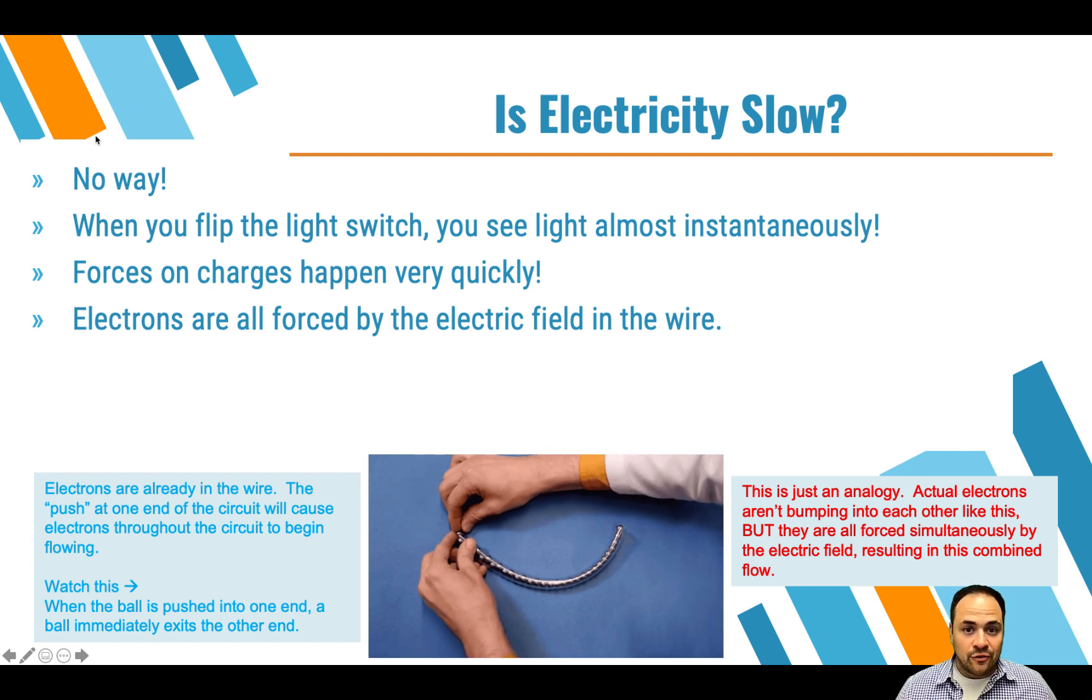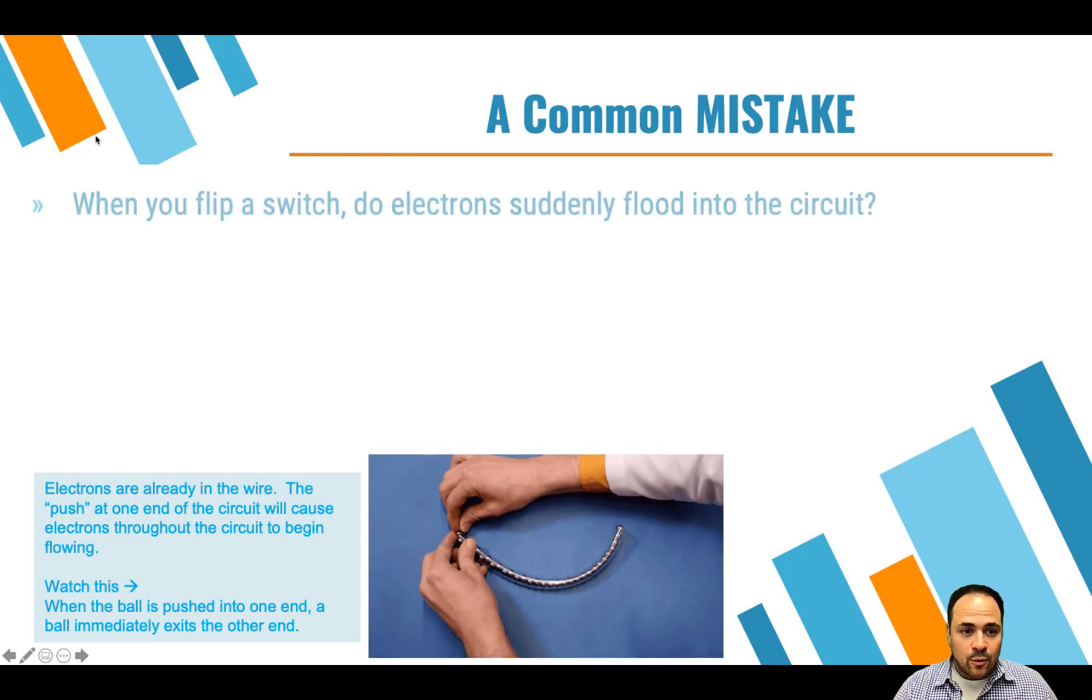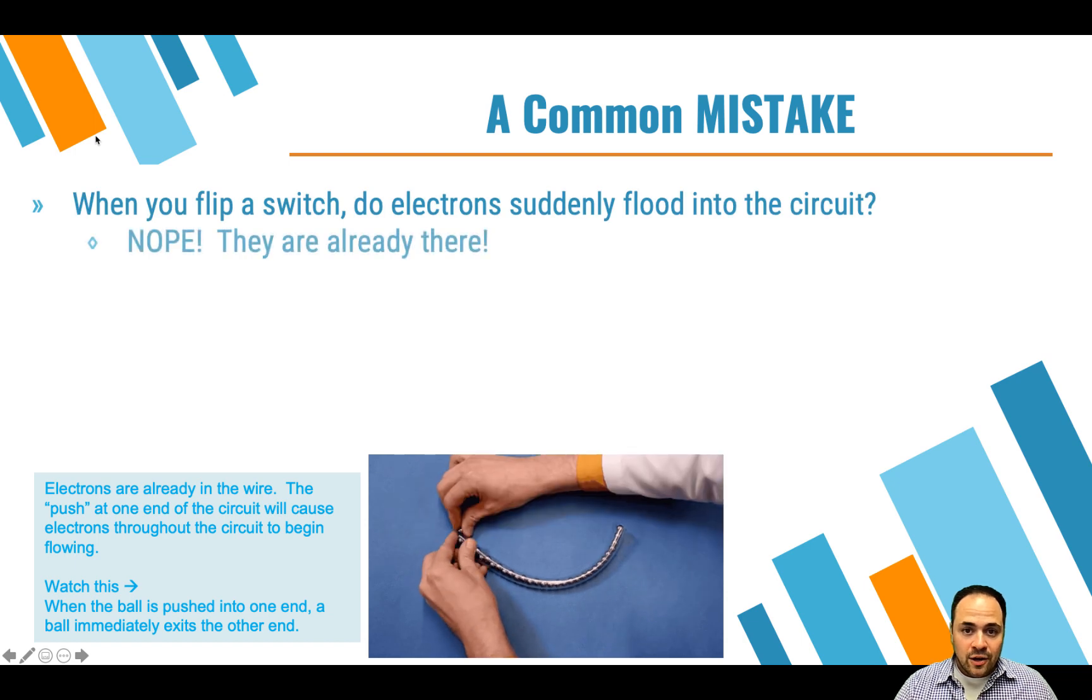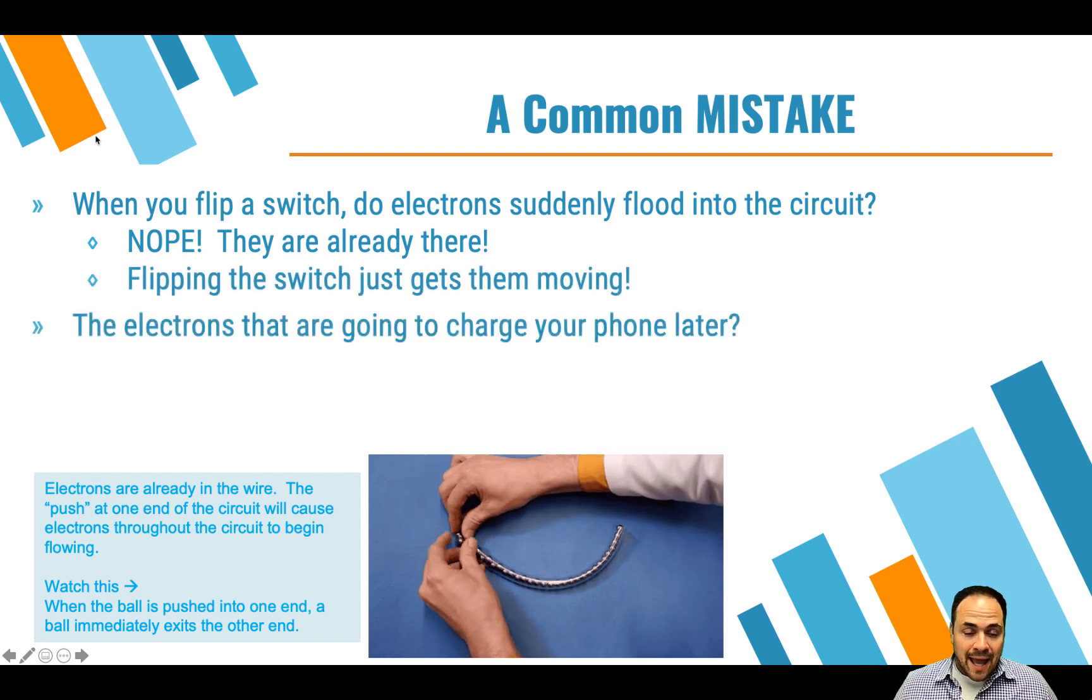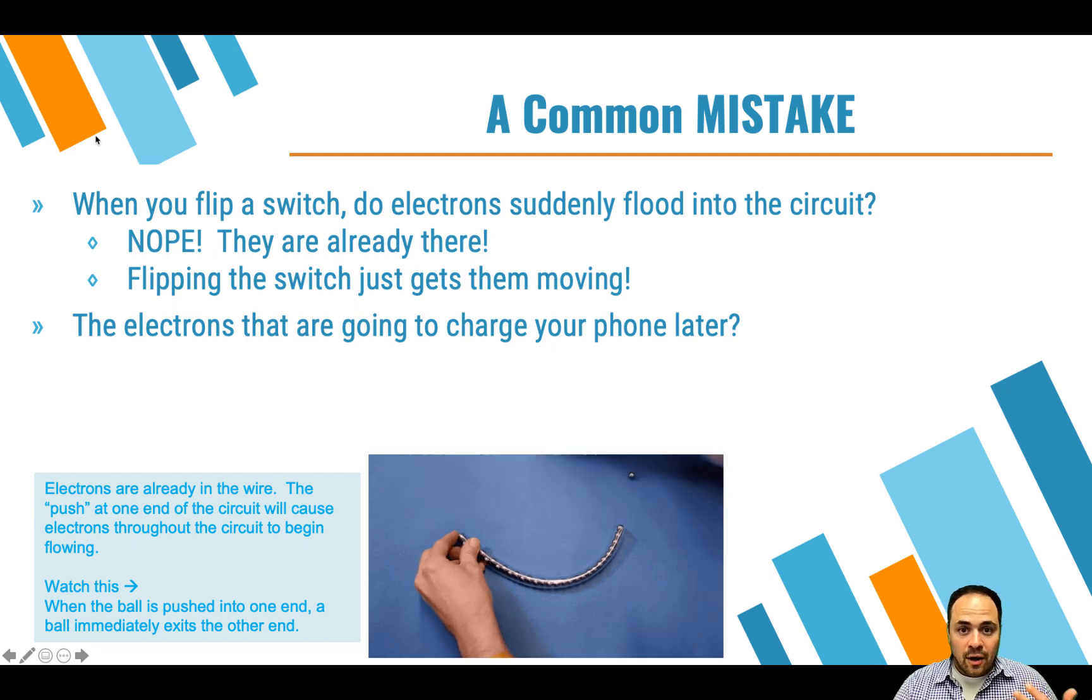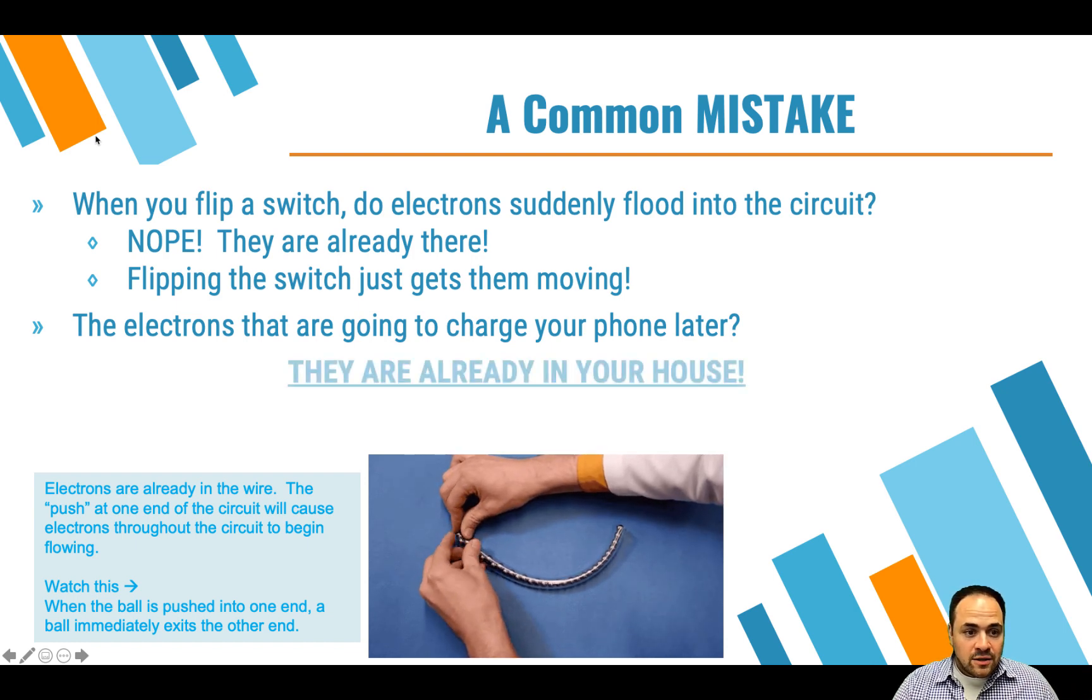Even if the electrons themselves are not really moving very far, they're already still there in the circuit. And so when you flip on the switch, you're not just flooding the circuit with electrons out of nowhere, they were actually already there. They're just now being acted on by a field that's causing them to move once you flip that switch on. So the electrons that are going to charge your phone later are actually already there in your house, already in the wire. They just need some kind of field to motivate them to start moving.